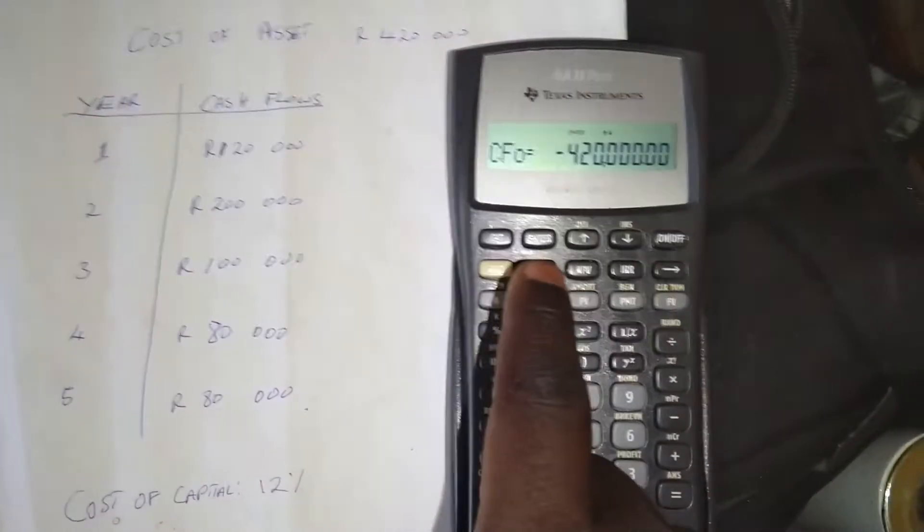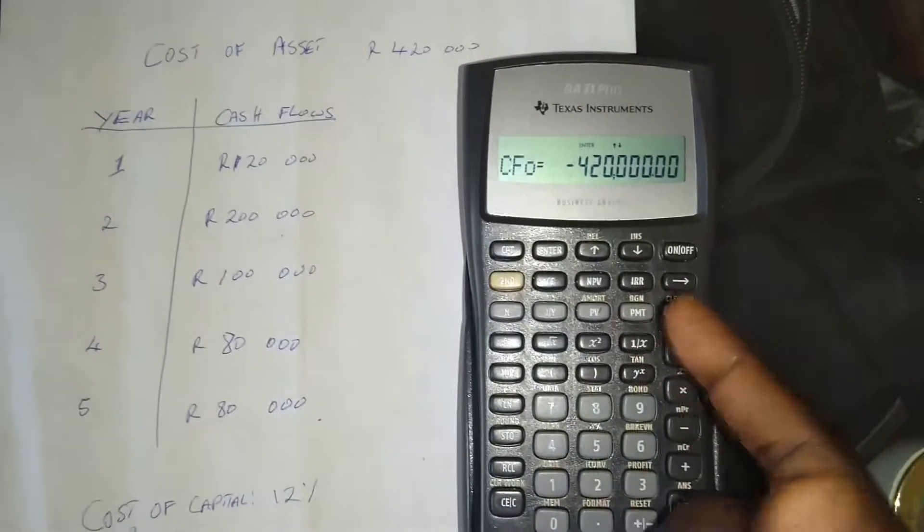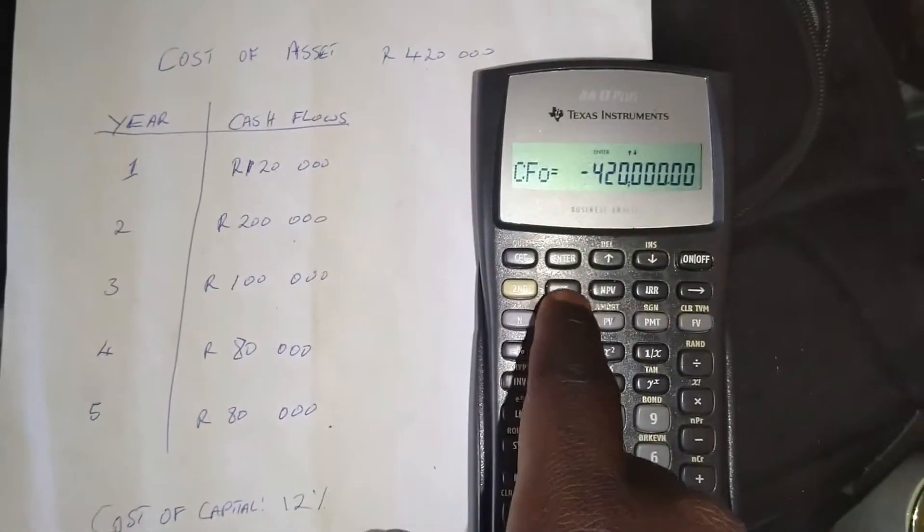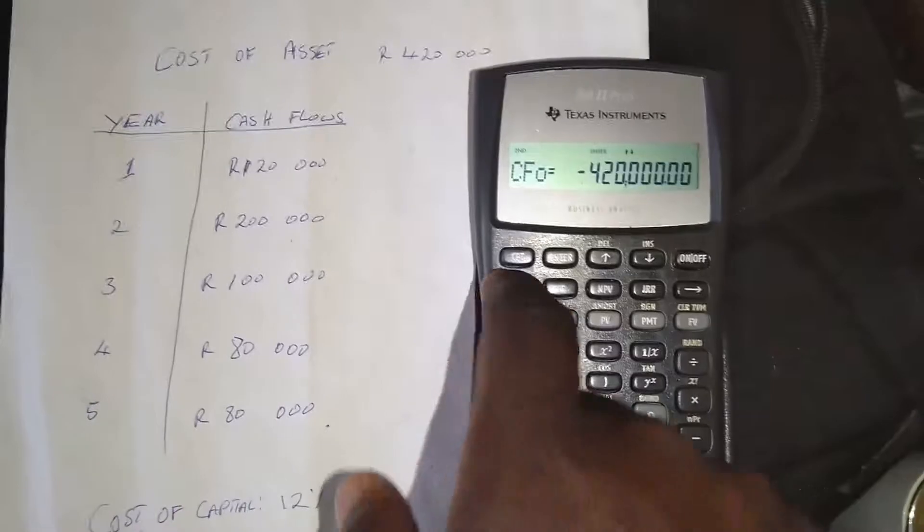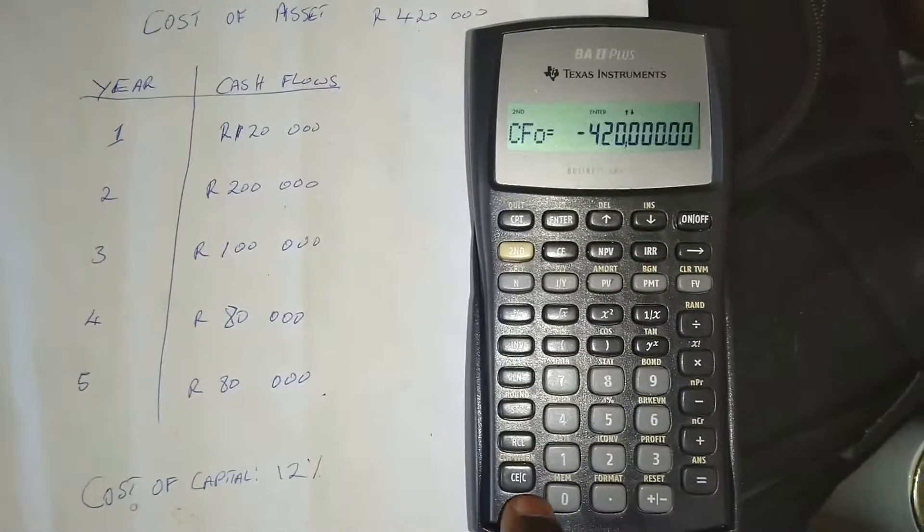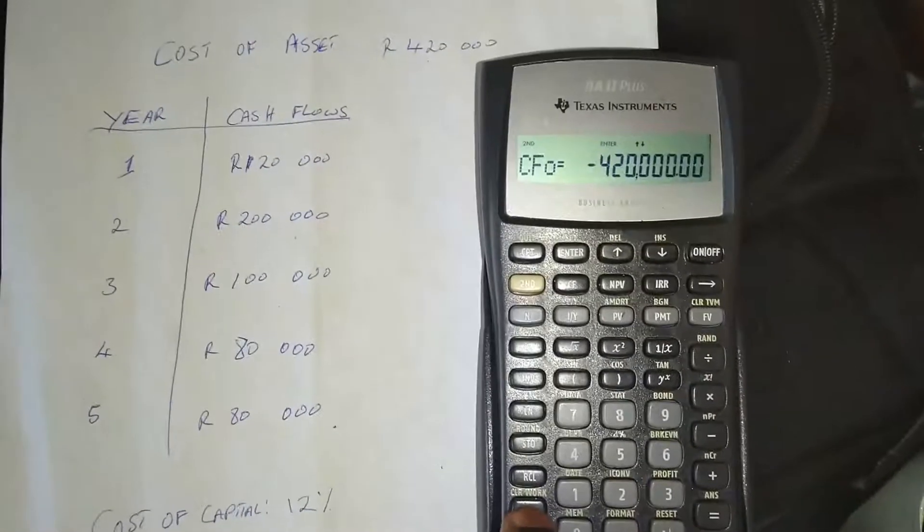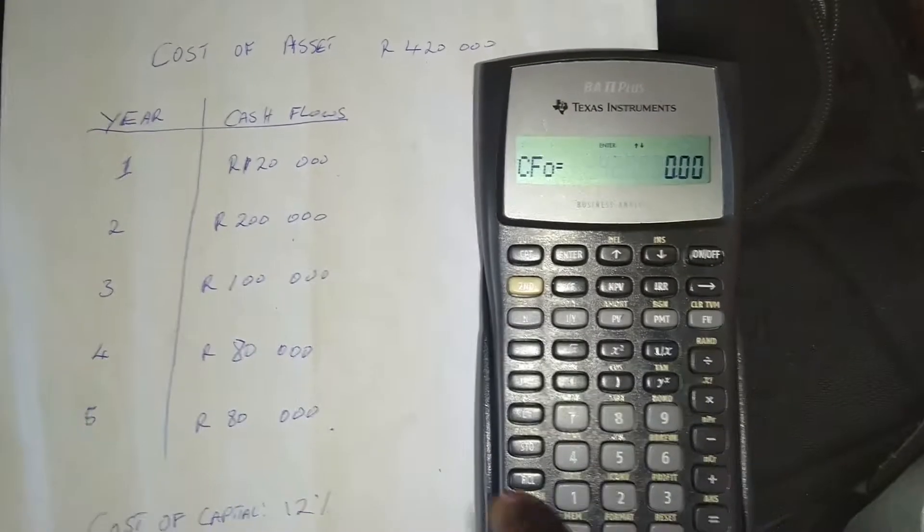So we click on cash flows with this one. And then you can see I've already done a calculation here. So I have to clear that one. So you click on cash flows, and then you click second function. And then you click here where it's written CE slash C. And you can see on top, it's written clear work. So you press that one.